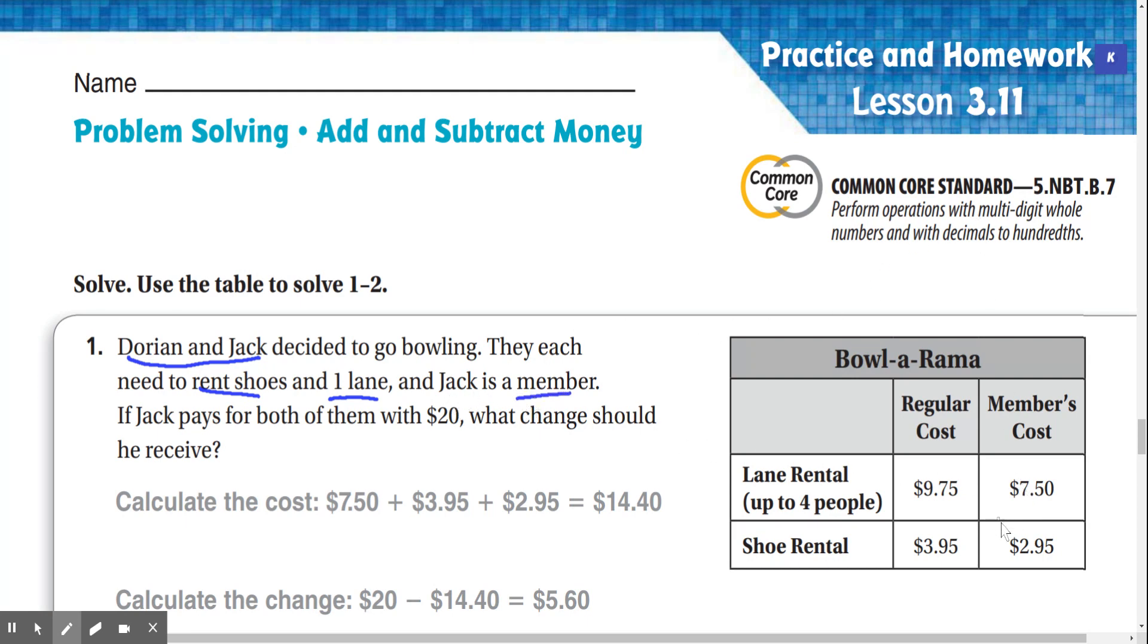He needs to buy, and also mentions that he is a member. So for his shoes it's going to cost $2.95, and for his friend Doreen's shoes it will cost $3.95. The lane's going to cost $7.50. So if we add all those values up, we're going to get $14.40. And now it says that Jack paid with a $20 bill. So if we subtract $20 from $14.40, we should get our change, which is $5.60.